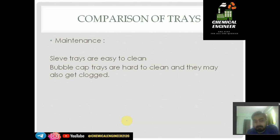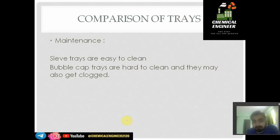From the maintenance point of view, sieve trays are easy to clean, while bubble cap trays are hard to clean. In the bubble cap area, clogging may occur, which can cause improper mass transfer because the vapor cannot come out through the clogged slots. A pressure rise in the distillation tower is not an easy thing to manage, and that is why bubble cap trays are hard to clean.